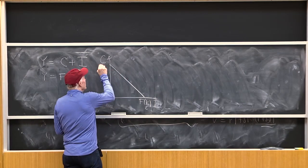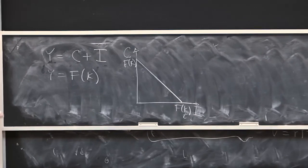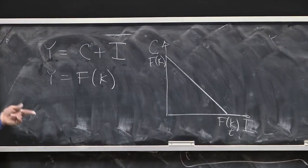That's the production possibility frontier. The production possibility frontier between C and I is linear, so a constant trade-off between C and I.